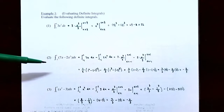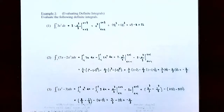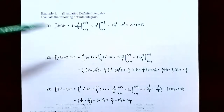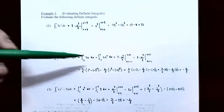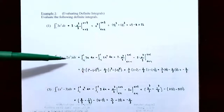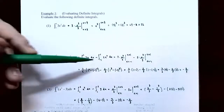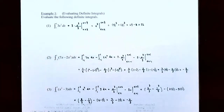Number two, find the value of the definite integral from negative one to one of 7x minus 2x squared dx. Just as we have properties for the indefinite integral, we can find the antiderivative of each term separately and keep the signs between them. We have the integral from negative one to one of 7x dx, minus the integral from negative one to one of 2x squared dx, keeping the limits of integration the same for both integrals.